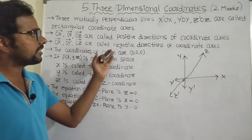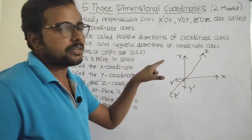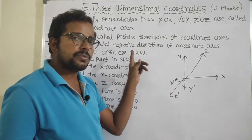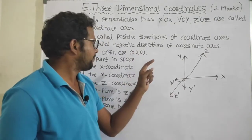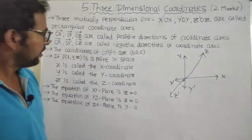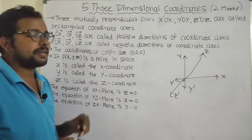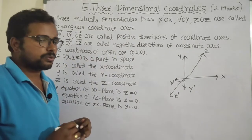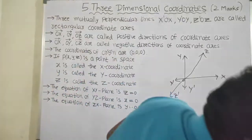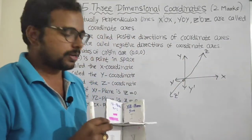The coordinates of the origin — since we are talking about 3-dimensional coordinates — the origin also takes three dimensions. Origin is (0, 0, 0). Suppose P of X, Y, Z is a point in space. I will show a model, that is a 3-dimensional coordinate system model, which is prepared by me.